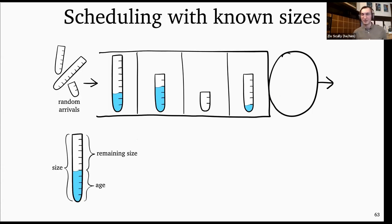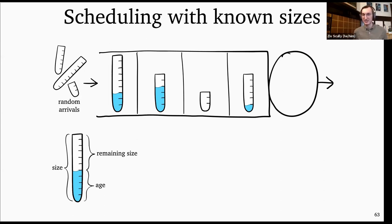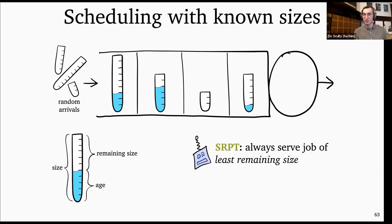Our goal metric is going to be response time — the time from when a job arrives in the system to when it leaves. The response time is going to be greatly impacted by the scheduling policy. Our goal is to minimize the mean response time over all jobs, which by Little's law is equivalent to minimizing the mean number of jobs in the system.